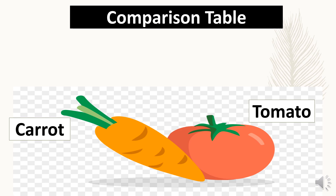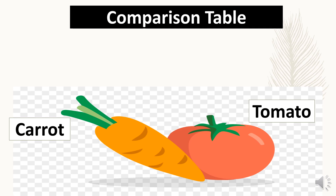Now I am going to show you a sample comparison table of two objects. We have here a carrot and a tomato. We are going to compare their color, shape, and texture. Let's begin. For the carrot, its color is orange-yellow, while the tomato is red.